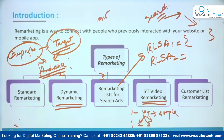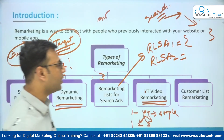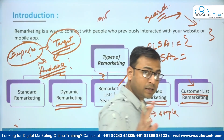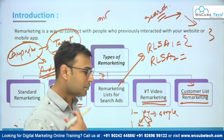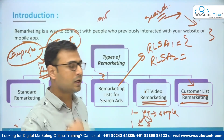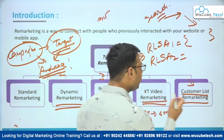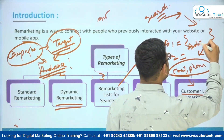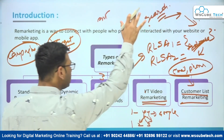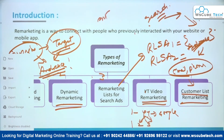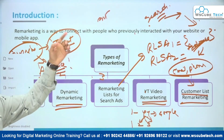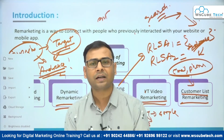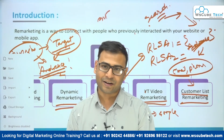Customer list remarketing is straightforward — as the name suggests. You collect email addresses or phone numbers of your customers or visitors through various methods. You use that information to create an audience. Once that audience is ready and those people have already interacted with your business, page, or any property you have, they fall under your remarketing audience.